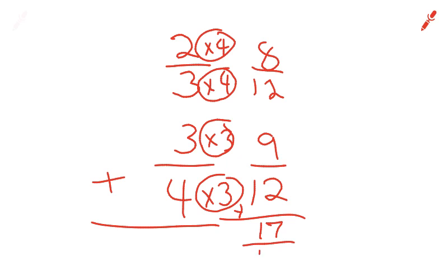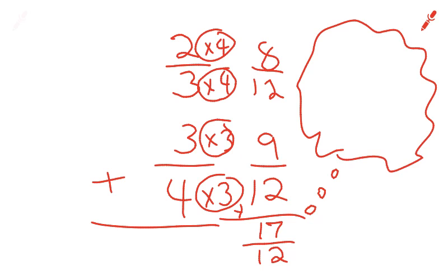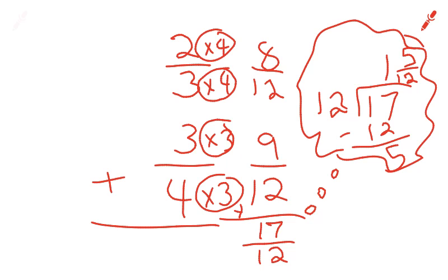It would be 17 over 12. Now we're not finished because that's an improper fraction. We have a bigger number on top. So we need to think to ourselves, how many times does 12 go into, messy 12, go into our 17? It goes in one time with 5 remaining. So we get 1 and 5 over 12 cups. Remember, our answer is 1 and 5 over 12 cups.